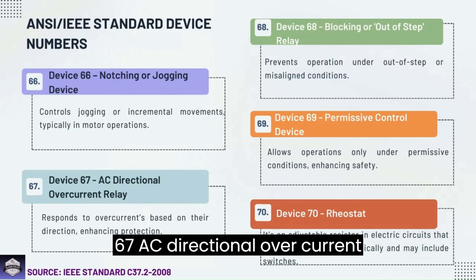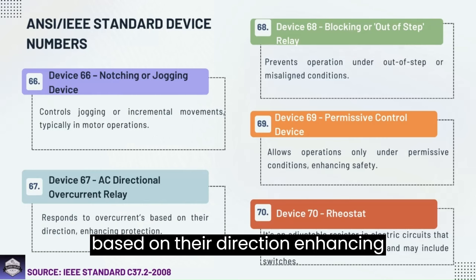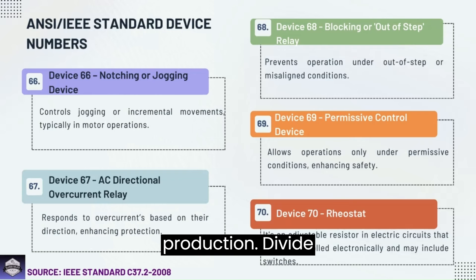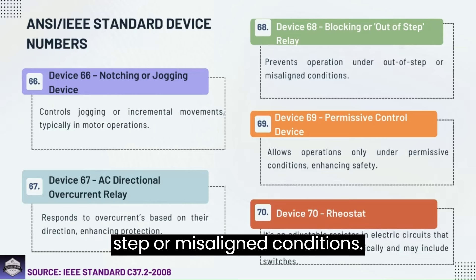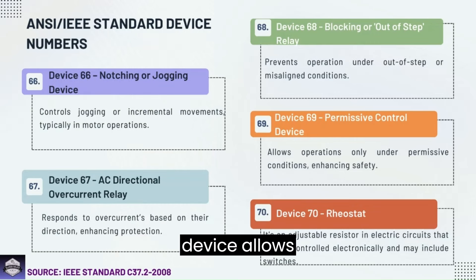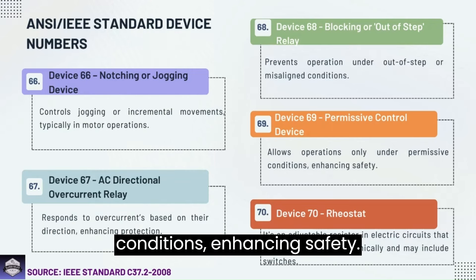Device 67: AC directional overcurrent relay — responds to overcurrents based on their direction, enhancing protection. Device 68: Blocking or out-of-step relay — prevents operation under out-of-step or misaligned conditions. Device 69: Permissive control device — allows operations only under permissive conditions, enhancing safety.